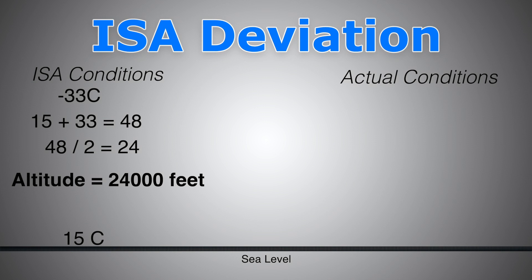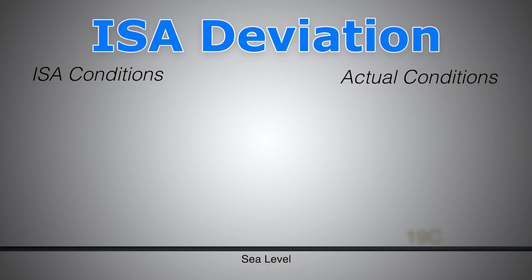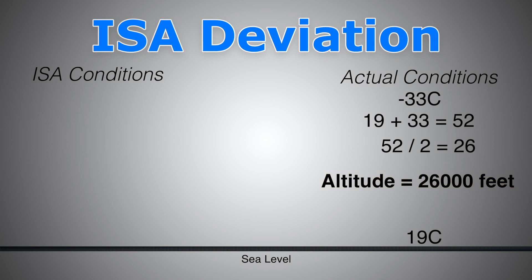However, in the given, we have an ISA deviation plus 4. So instead of using 15 degrees at sea level, we will use 15 plus 4, which is 4 degrees hotter than 15, which happens to be 19 degrees. So 19, same, plus 33, 52. 2 degrees per 1000 feet. So we divide 52 by 2 and we get 26. Since altitude is in thousands, we multiply that by 1000 and we get 26,000 feet, which is the altitude in this case.